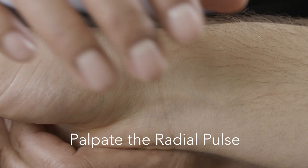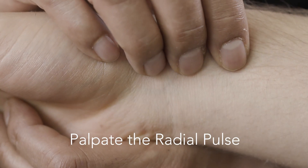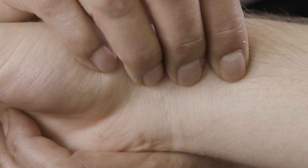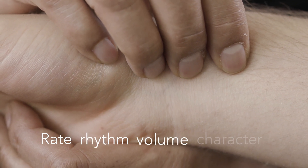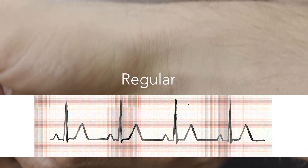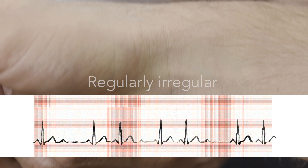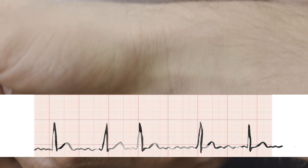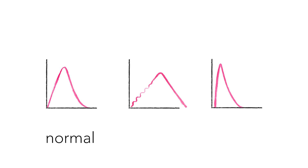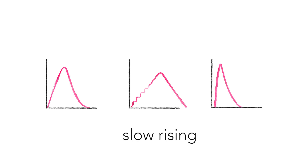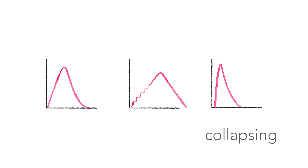Palpate the radial pulse with three fingers and assess for its key features. The rhythm may be regular (sinus rhythm), regularly irregular as in second degree heart block, or irregularly irregular as in atrial fibrillation. A slow rising or plateau pulse is indicative of aortic stenosis. A collapsing or water hammer pulse is indicative of aortic regurgitation or patent ductus arteriosus.